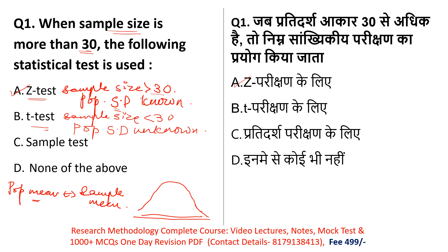Remember: T-test is used when the sample size is less than 30 and the population standard deviation is unknown. Z-test is used when the sample size is more than 30 and the population standard deviation is known. So in that case, we use the Z-test.